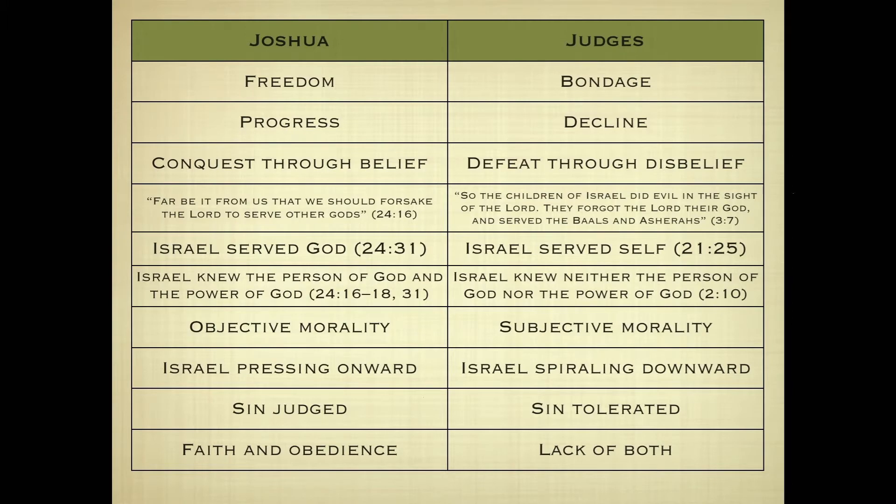These two books, though chronologically following each other, show Israel in two completely different lights — an astonishing portrait of the condition of the human heart, especially in a collective narrative. We see in our own lives whether we're going to pursue the people and purposes of God, or become more autonomous. God has created us, redeemed us, purchased us twice — by creation and by redemption — yet still we rebel against him. It's a constant process.